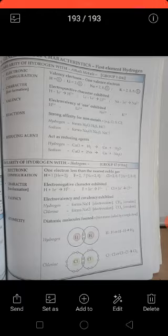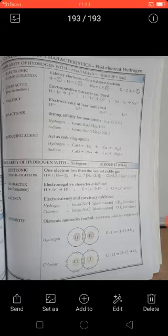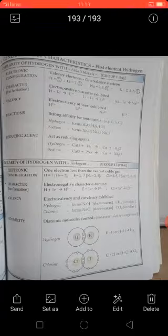No need to worry much about this part because we are going to study about covalency and electrovalency in the coming chapters. Just remember these things. And atomicity - diatomic molecule. You know the definition of diatomic molecule: atoms which exist in the form of two atoms linked by a single bond.